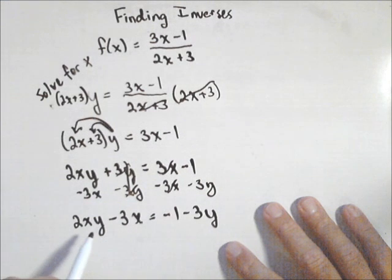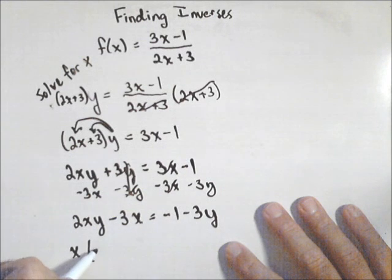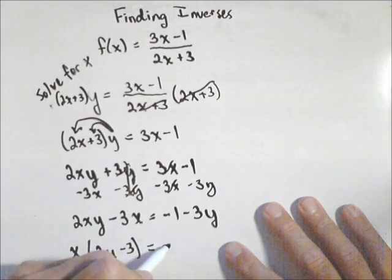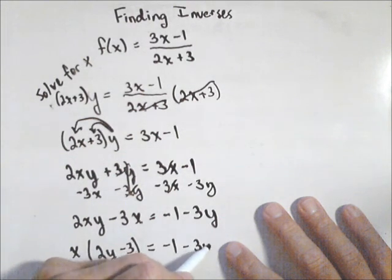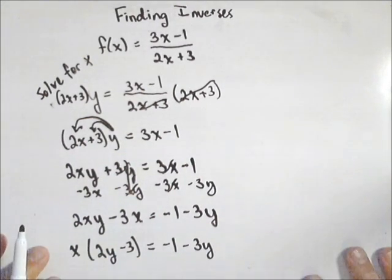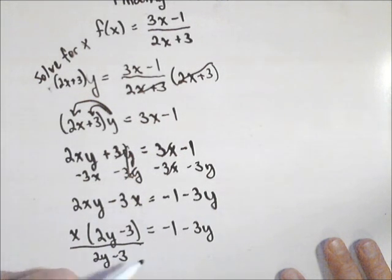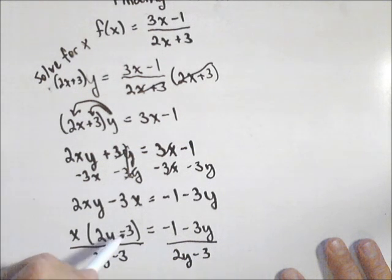The reason we did that is so we could factor out x. So I can rewrite this as x(2y-3) = -1-3y. My final step is to divide both sides by (2y-3), and that will cancel. And I have my inverse.